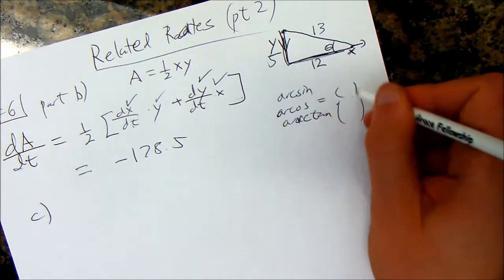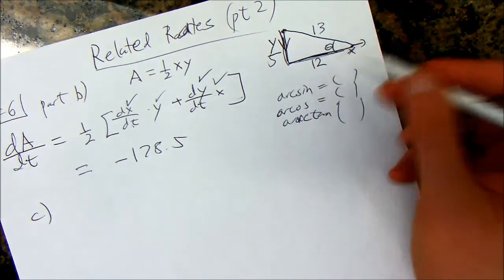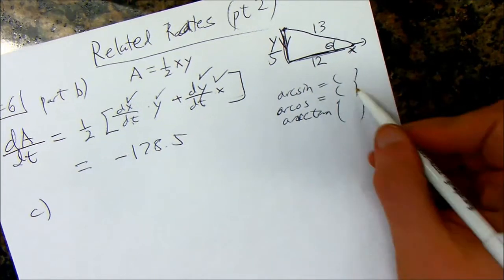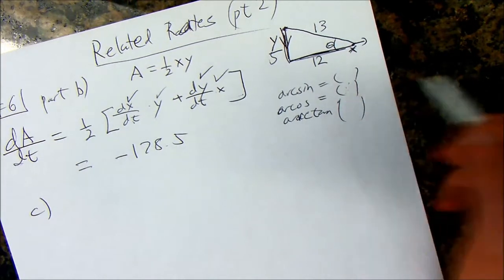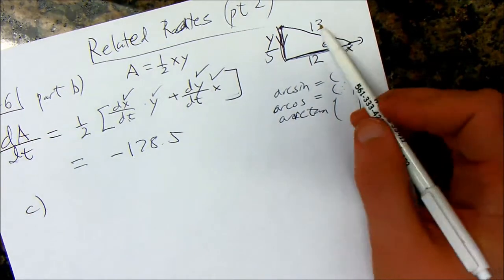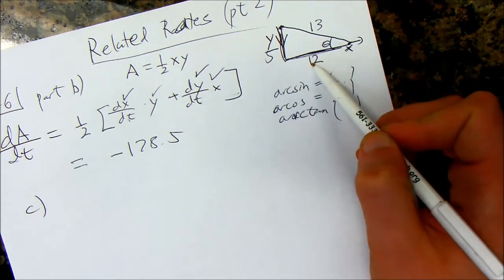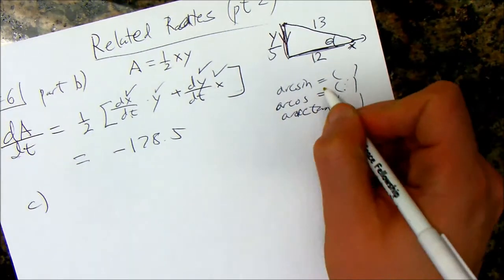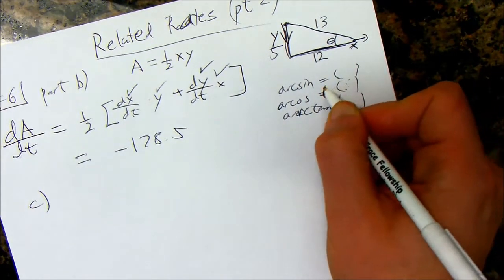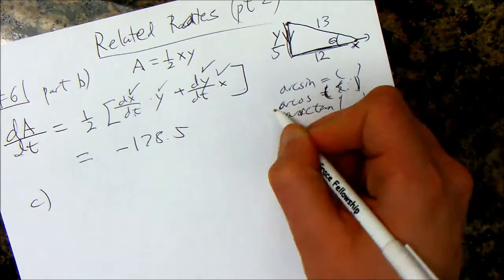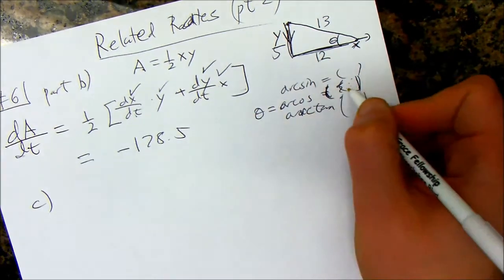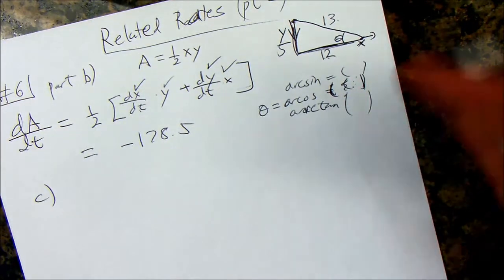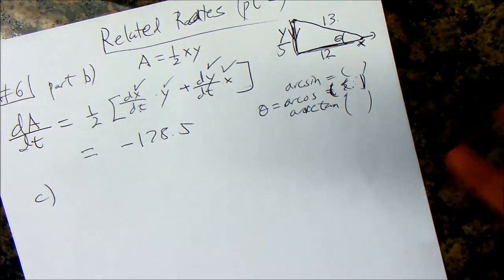So, we know a lot about this triangle. Let's say we know this is 13. We figured out that this was 12. This side of the triangle was 12. And then we figured out that this side of the triangle was 5. So, what is the right inverse function to pick? Remember, we have arc sine, arc cosine, and arc tangent.